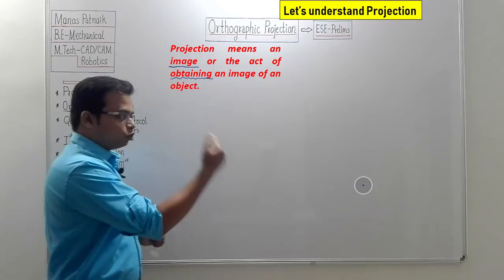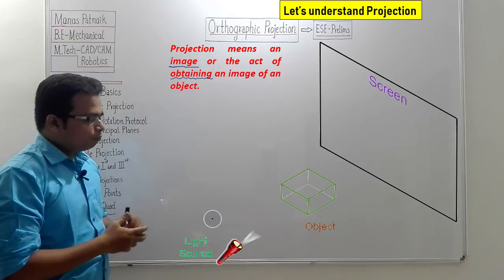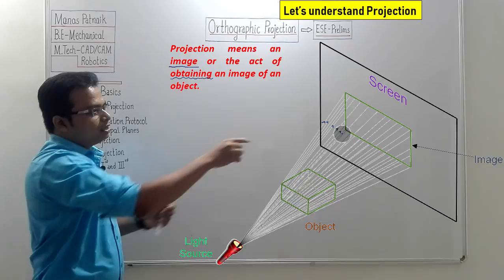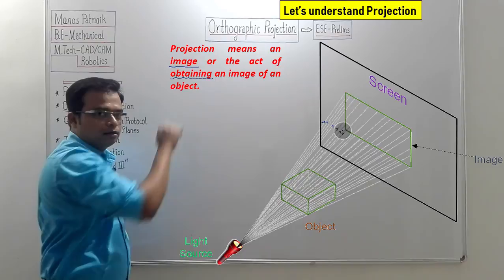To understand that, let me present three elements: an object, a light source, and behind the object a screen where we find the image. When we switch on the torch, rays of sight shoot through the object and you see the image. The front face of this cuboid is visible in a magnified form — meaning that when we speak of projections in general, it does not give you the true shape and size of the object.